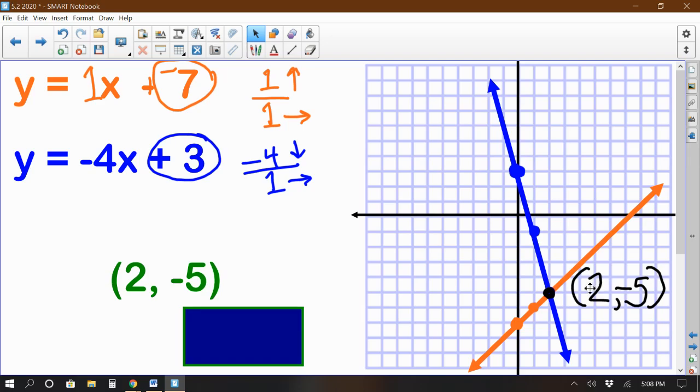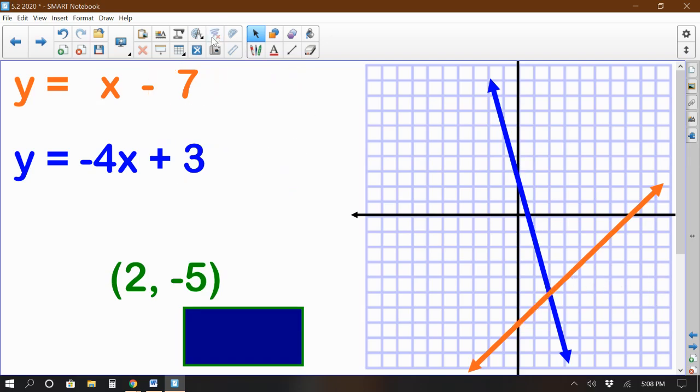One really good idea, I'm just going to clear all this, is to take that ordered pair and make sure it works in both equations. So here we go. This is my x. This is my y. 2 minus 7. Yep. That's negative 5. Right here, negative 4 times 2 is negative 8. And negative 8 plus 3 yes, again, that's negative 5. Perfect. This ordered pair does work in both equations.